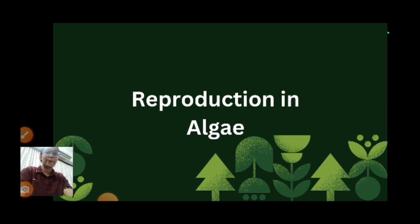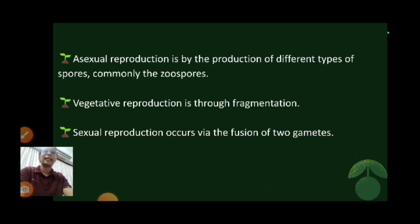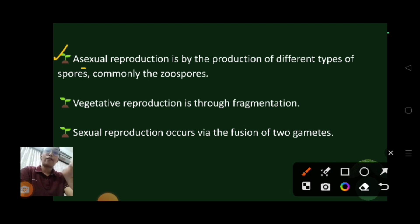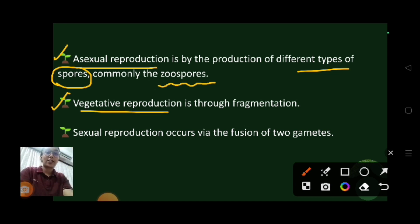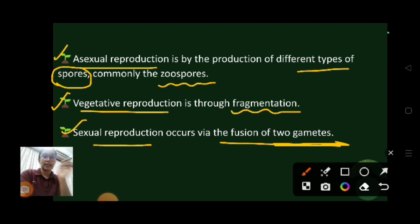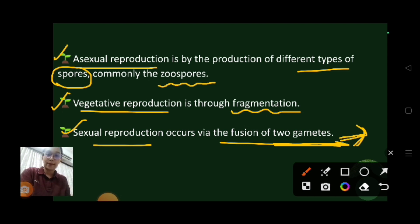Now let's see reproduction in algae. There are three different types: vegetative reproduction, sexual reproduction, and asexual reproduction. Asexual mode is by formation of different types of spores, commonly known as zoospores. Vegetative reproduction is through fragmentation. Sexual reproduction involves the formation and fusion of two different gametes, which undergo fertilization to form a zygote.